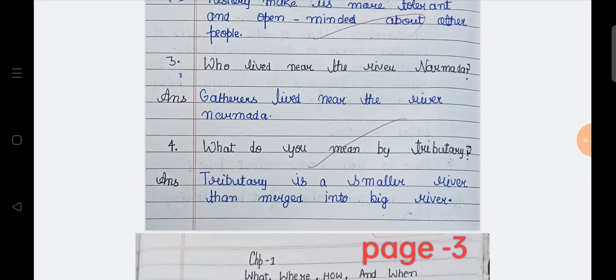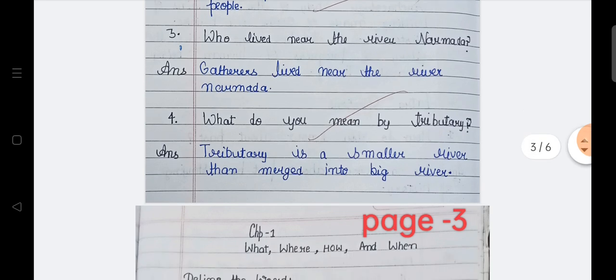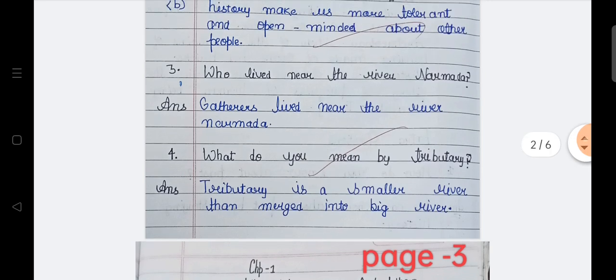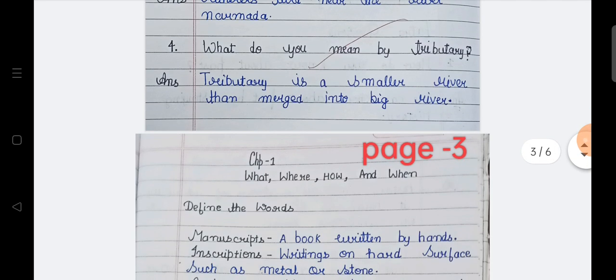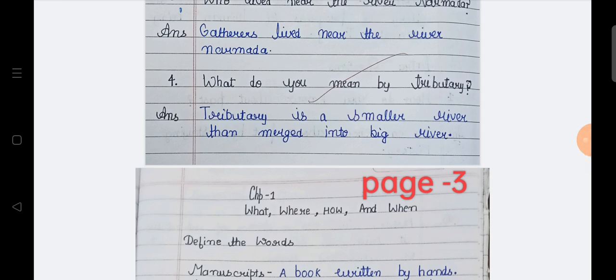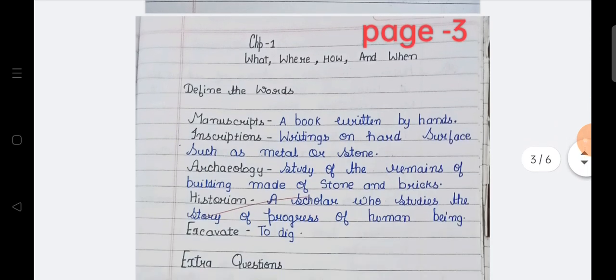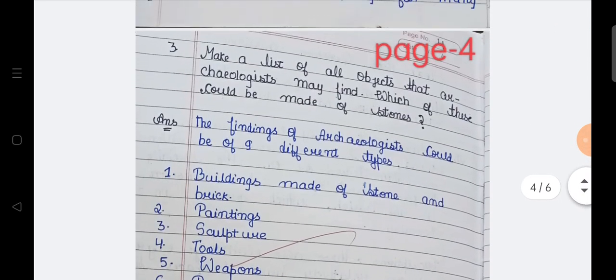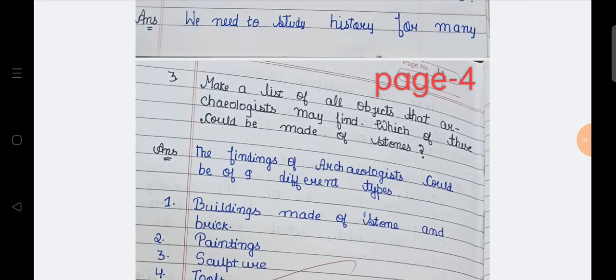Third question is who lived near the river Narmada? So gatherers lived near the river Narmada. Who are gatherers who gather food and other materials for living? Fourth question is, what do you mean by tributary? Tributary is a smaller river than merged into big rivers. So first of all, tributary is a small river and afterwards, it is merged into big rivers.